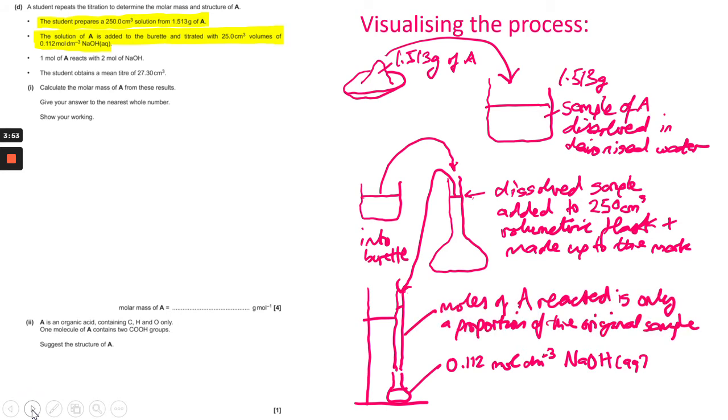And then it says that the student obtains a mean titer of 27.30 centimeters cubed. So what you've got to remember is the moles of A that are required is only a proportion of the original sample because you're not going to use the whole burette full up, you're going to use a small amount of it.